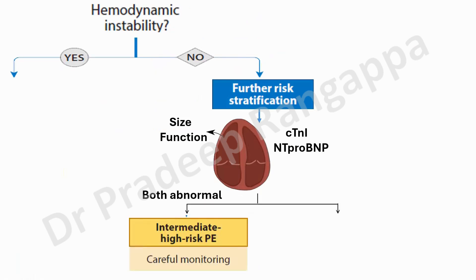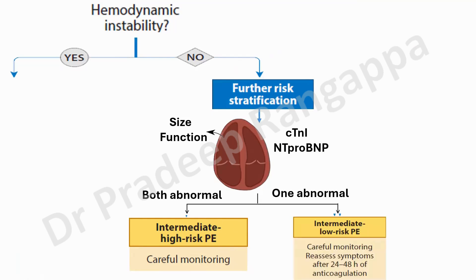If both echo findings of RV dysfunction and elevated BNP or troponin are abnormal, the patient is categorized as intermediate-to-high risk PE, requiring careful monitoring. If only one is abnormal, it is intermediate-to-low risk, still requiring monitoring in an ICU or HDU for 24 to 48 hours.